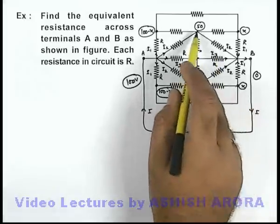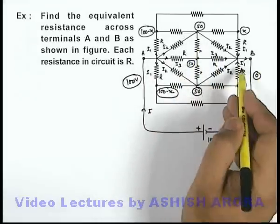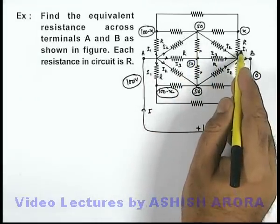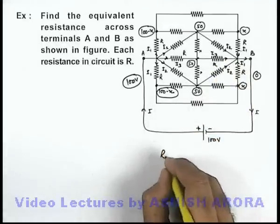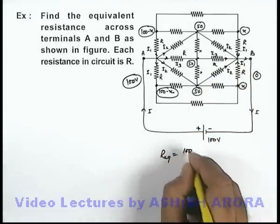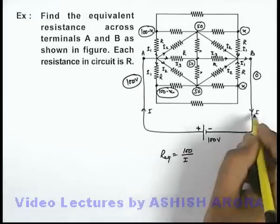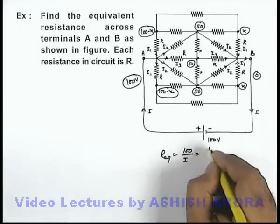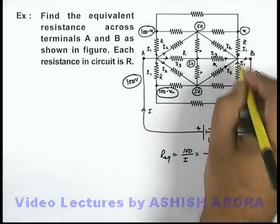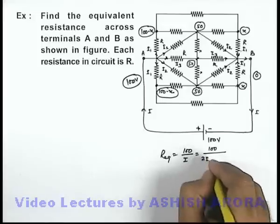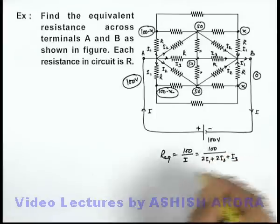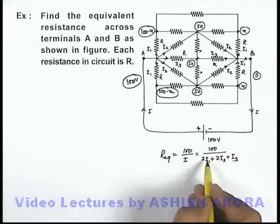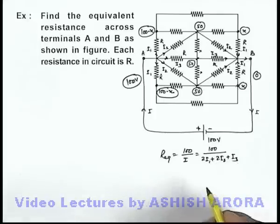But anyway we are not bothered about it. We can directly calculate the value of total current i by constitution of i1, i1, i2 and i3. And we can directly write the equivalent resistance to be equal to hundred by i. And here this i can be written as hundred divided by - this can be constituted by 2i1 plus 2i2 plus i3. This is the way we are going to get - we just need to calculate the values of i1, i2, i3 and we'll substitute here.